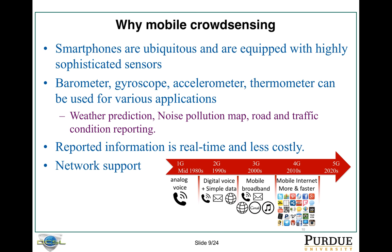Then why do we need mobile crowd-sensing? There are basically four reasons. The first one is that smartphones are everywhere, and they are equipped with very good and sophisticated sensors to give enough information. The sensors include barometer, gyroscope, accelerometer, thermometer — all kinds of things. They can be used for different applications, like weather prediction, noise pollution maps, and road traffic condition reporting. Information reporting from the device is real-time and less costly. Say if we want to know the weather map for the United States, instead of installing weather stations across the country, you can take advantage of users across the country and ask them to report the weather information locally, and then synthesize the weather map. Easy and cheap.